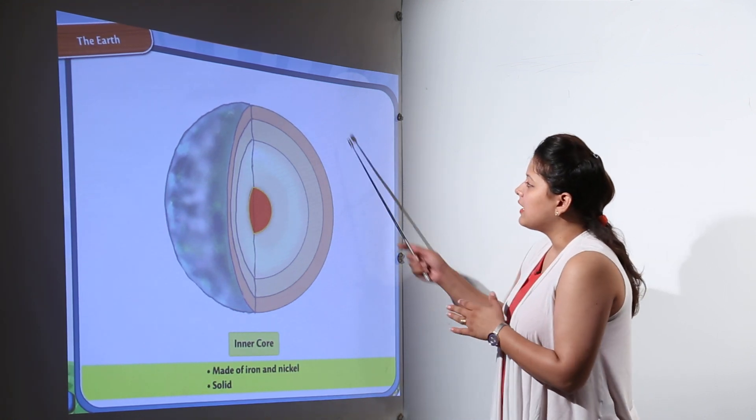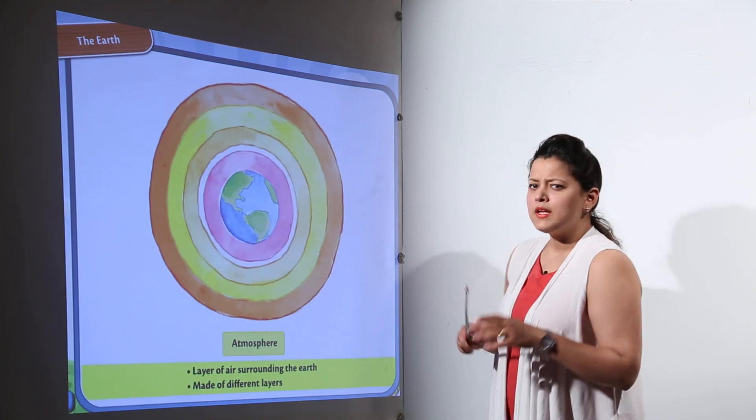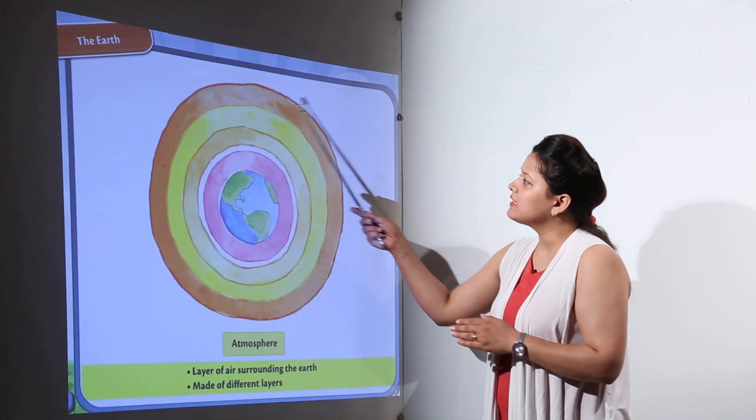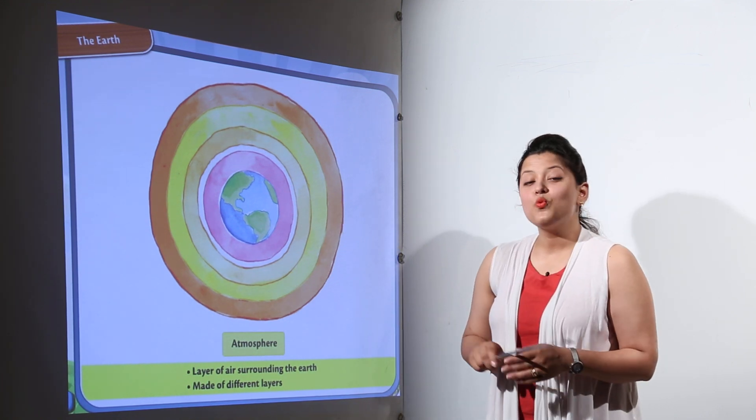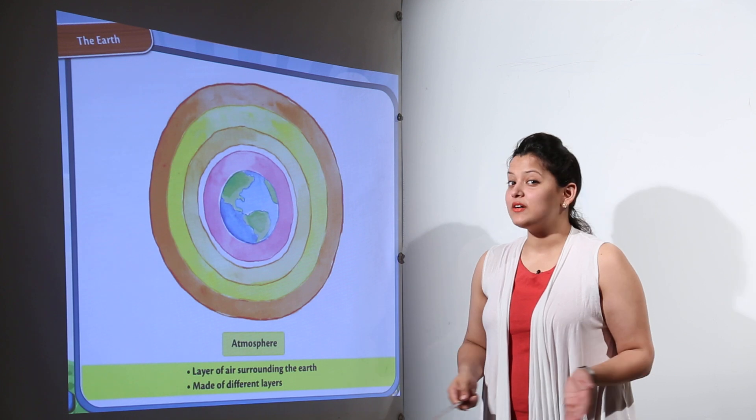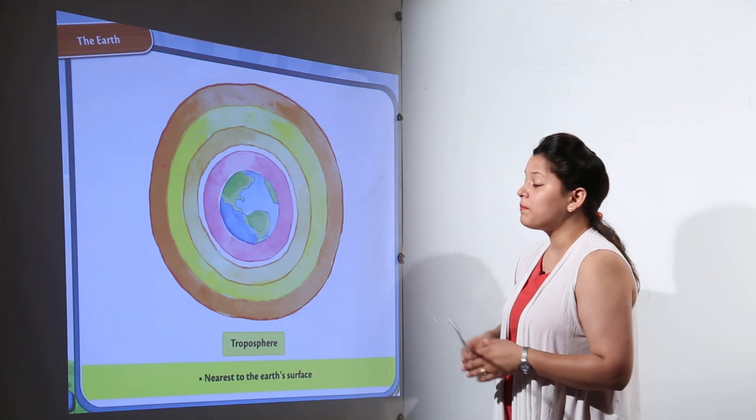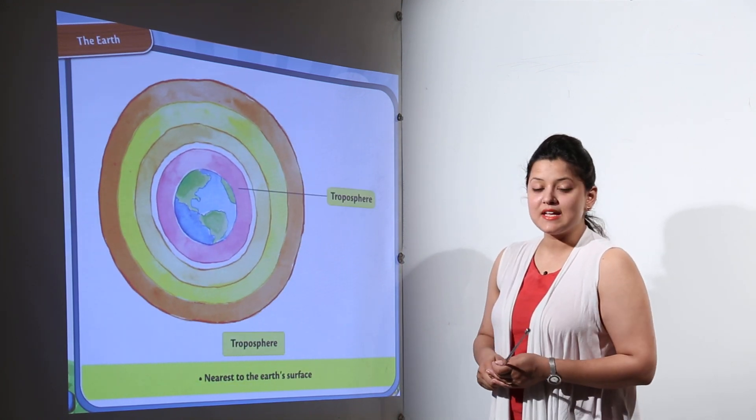Now that was about the structure of Earth. Let us come a little out and talk about the atmosphere. It is the layer which is surrounding the whole Earth and it is made up of so many different gases together.